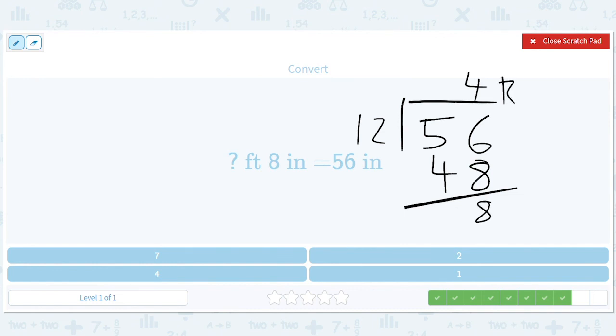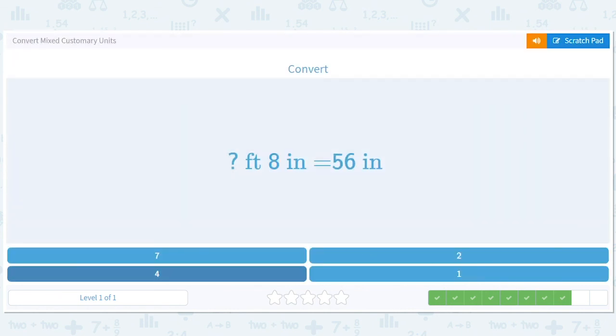So we have four remainder eight. So it's four full feet and then eight inches, but that had to be eight, but it's nice to check. So the answer is four. Four feet and eight inches.